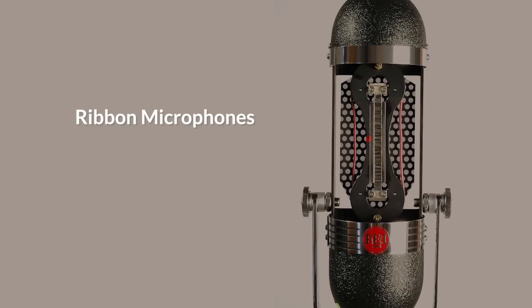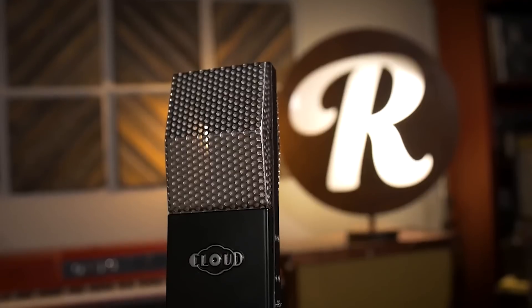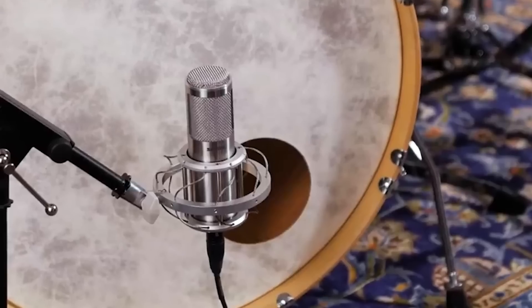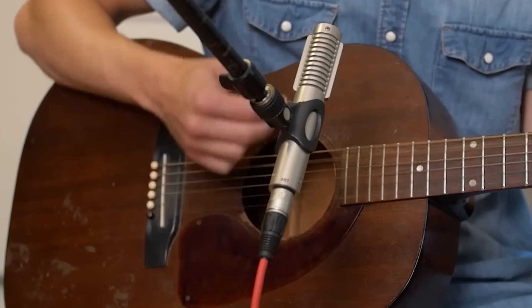Ribbon mics are the last to discuss. Named after their ribbon appearance, they have a natural figure-eight polar pattern. Inside the microphone there is a very thin aluminum alloy ribbed foil between two magnets, which is very close to how electromagnetic speakers perform. Ribbon microphones are technically dynamic microphones, but they are not as rugged — they are very sensitive and could be damaged if not handled carefully. Be very careful with plosives or large bursts of air pressure. They have the most accurate sound reproduction and bring a warm vintage character to vocals, horns, and overly bright brass instruments, making them quite versatile.